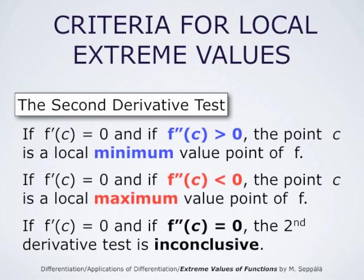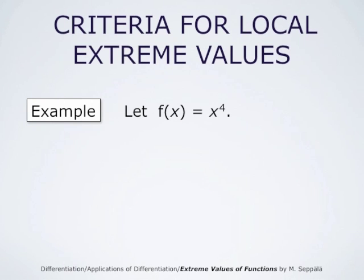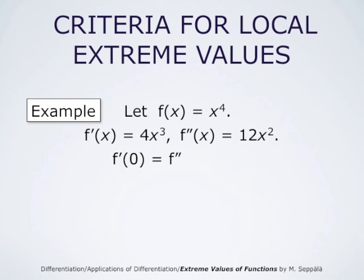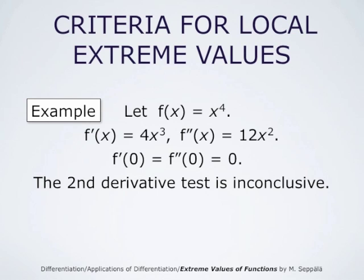As an example, consider the function f(x) = x to the fourth. This function takes positive values when x is different from 0, and takes the value 0 when x equals 0. So x equals 0 is a global minimum value point for this function. Let us see how our results apply: the first derivative is 4x cubed, and the second derivative is 12x squared. Both the first and second derivative take the value 0 at x equals 0. Therefore, the second derivative test is inconclusive for this particular function.